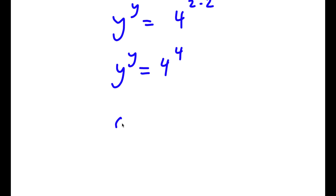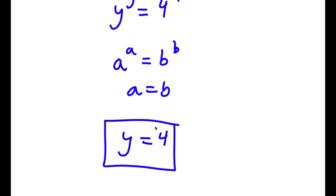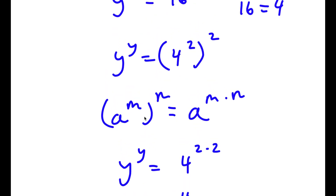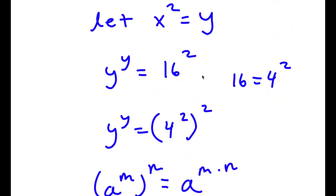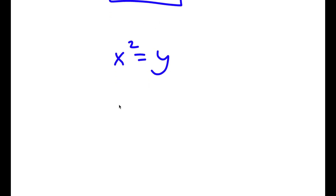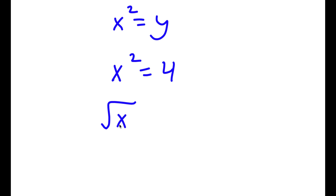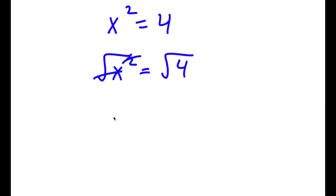Now if a to the power of a equals b to the power of b, then a equals b. So y is equal to 4. Remember we set x squared equal to y, so x squared is equal to 4. Taking the square root on both sides, x is equal to the square root of 4, which is positive or negative 2.